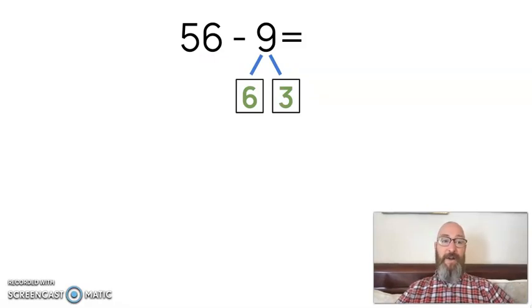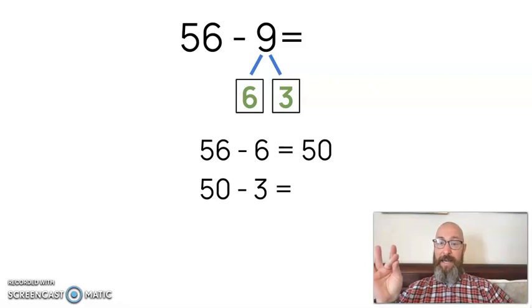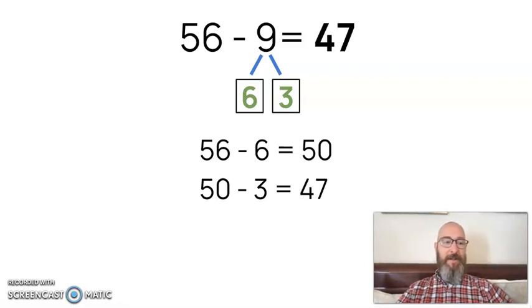So now I can start subtracting: 56 minus 6. Just like we did the other 3 times, when we take away this 6 from this 6, we're going to end up with no 1s there. If I take away all the 1s, it's going to be a 0. So 56 minus 6 is 50. Now I'm going to take away the 3: 50 minus 3. I can count backwards: 49, 48, 47. And 47 is the answer.